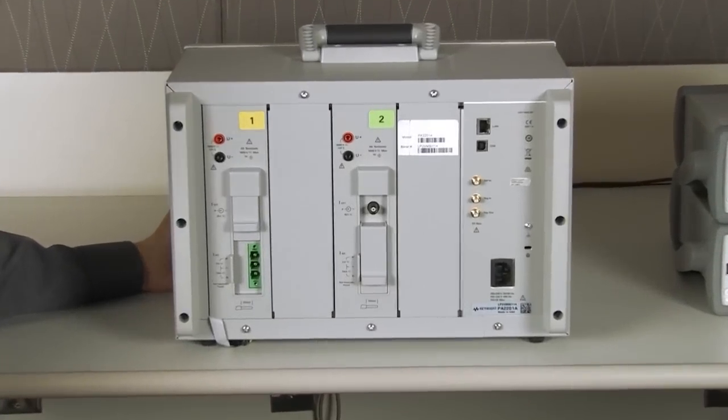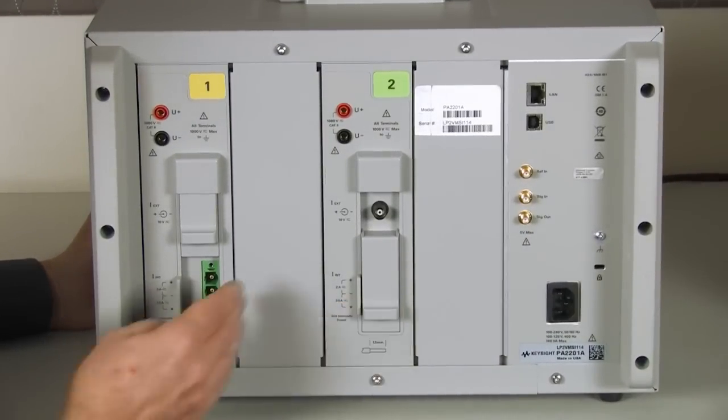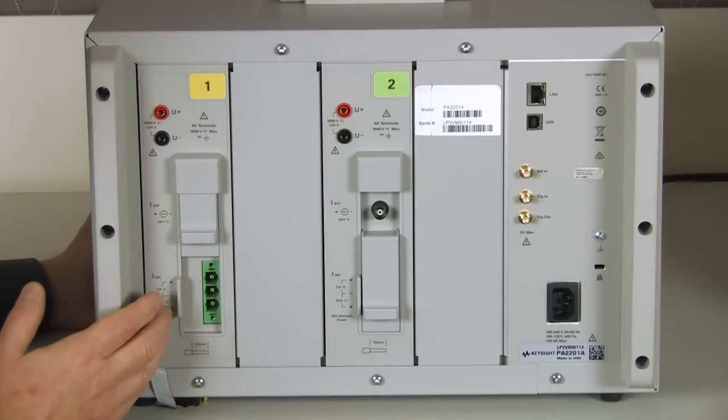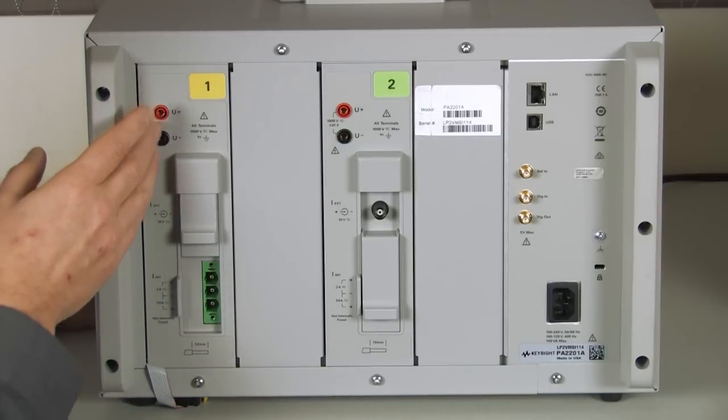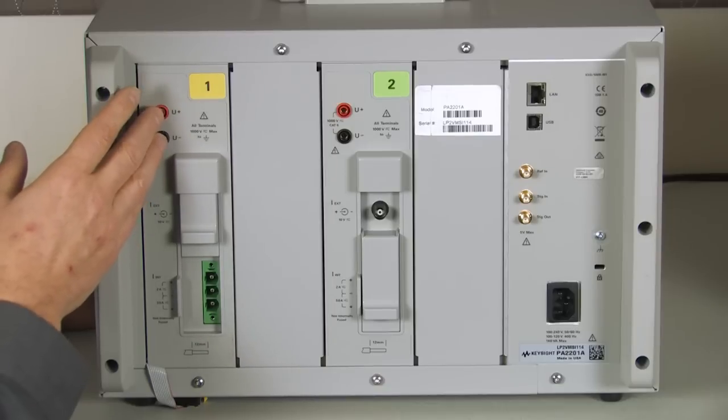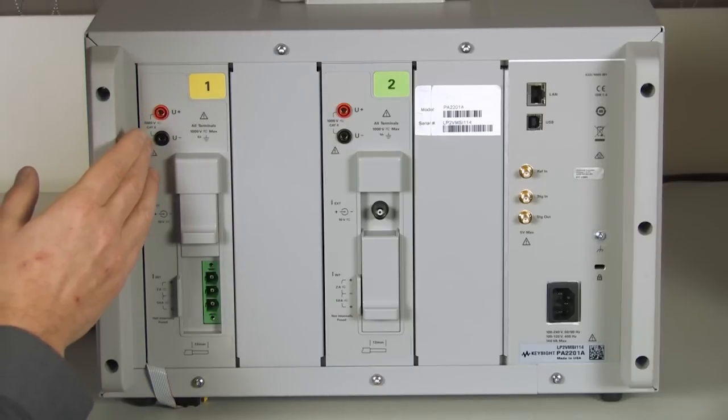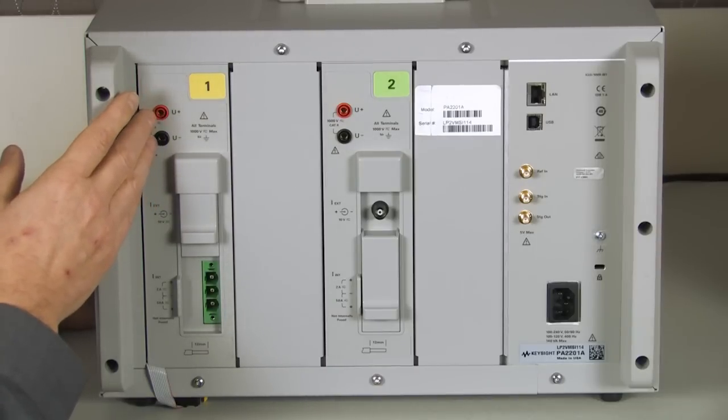First thing we're going to do is give you a tour of the connections on the back of the instrument. As we look at the rear of the instrument, the first thing you'll notice are the two power channels. Unlike an oscilloscope, a power analyzer power channel has both voltage and current connections. For the voltage connections, we use banana plug connectors, and these connectors are up to 1,000 volts RMS.